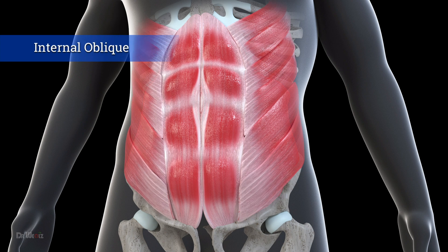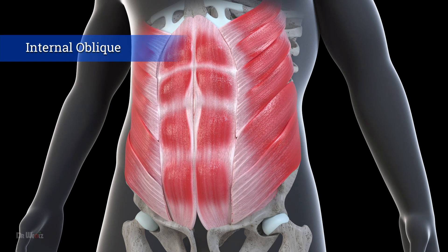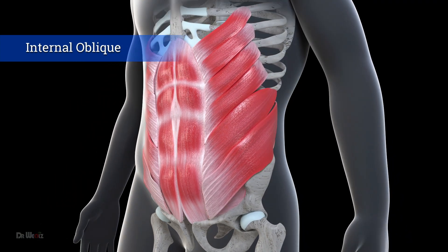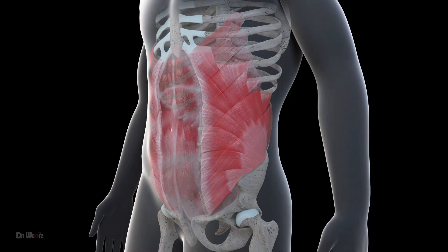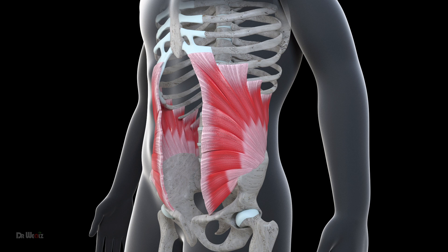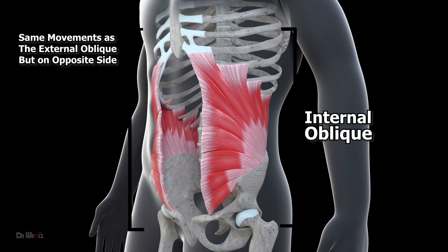Finally, we have the internal oblique, which runs perpendicular to the external oblique from the iliac crest to the lower ribs. This muscle is responsible for the same movements as the external oblique, but on the opposite side.